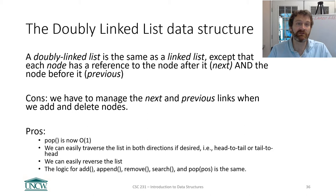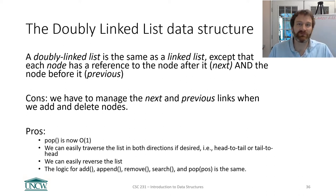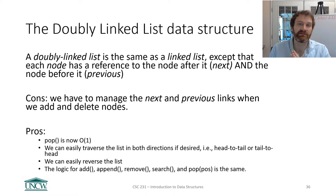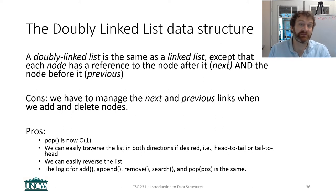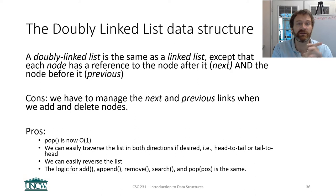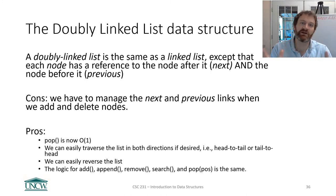The good news, though, is it gives us some really powerful tools. Most importantly, calling pop — which removes the last element of the list — is now big O of 1, just like in an array list. So if we use a doubly linked list, we can add and remove from the front and add and remove from the rear, the tail, in big O of 1 time. We can also easily traverse the list in both directions — head to tail or tail to head. And we can easily reverse the list, which is useful when you need to switch the order of things.